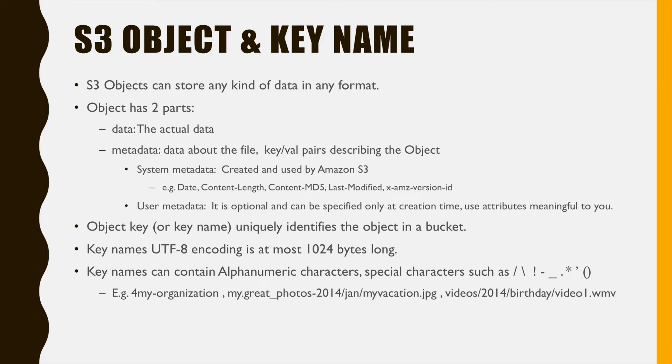S3 can store any kind of objects — binary, text, image, it doesn't really matter. When you operate, you work on one entire object. For example, you cannot edit just a few lines in a text file stored on S3; you need to override the entire object. An object has two parts: the actual data and the metadata. Metadata is basically key-value pairs.